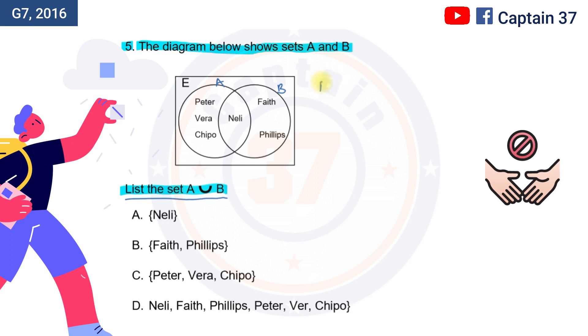Now, in A, we know that the elements that are in A: there's Peter, there's Vera, and there is Chippo. In B, there is Faith, there is Phillips, and Nelly.